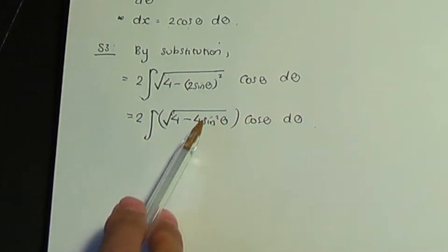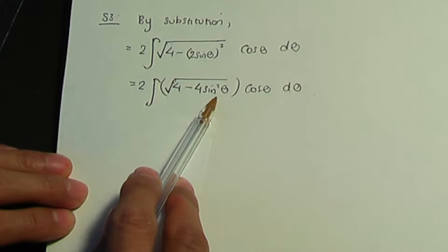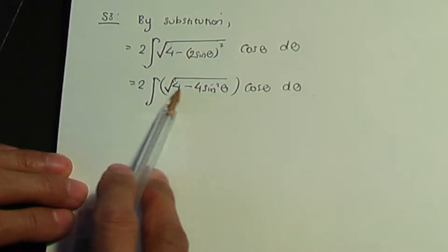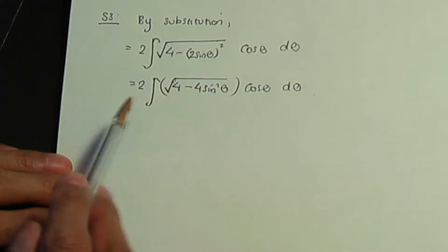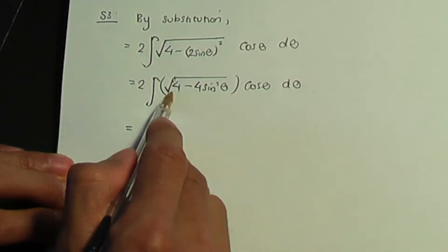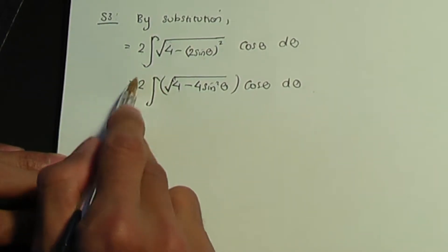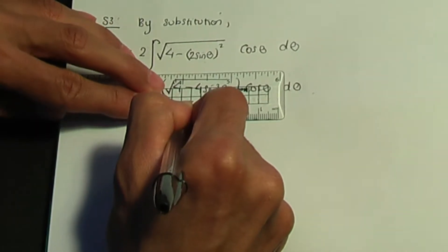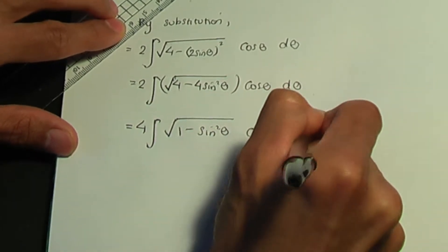Since we have a 4 common to both terms inside the root, I'm going to take a common factor of 4 outside the root sign. The root of 4 is 2, and that 2 combined with the 2 already outside gives us 4. So we have 4 into the integral of the root of 1 minus sin squared theta, times cos theta d theta.